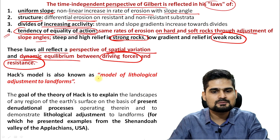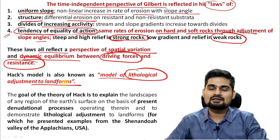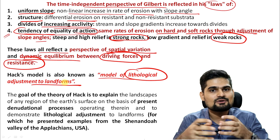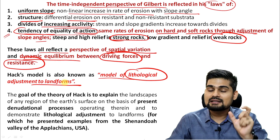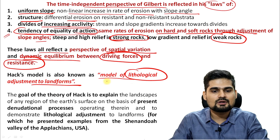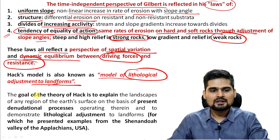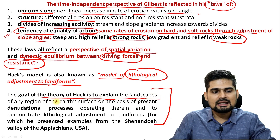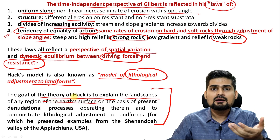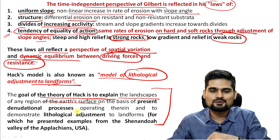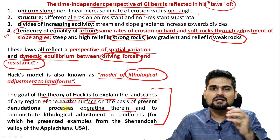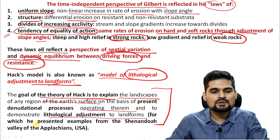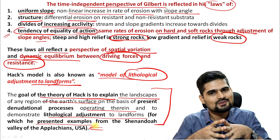Hack's model is therefore also known as the model of lithological adjustment to landforms. Lithology means the study of rock types and rock structures, and it will determine the landform character. So the goal of this theory is to explain the landscapes of any region of the earth's surface on the basis of present or contemporary denudational processes operating therein, in order to demonstrate the lithological adjustment to the landforms — for which Hack presented examples from the Appalachian Mountains in the US.